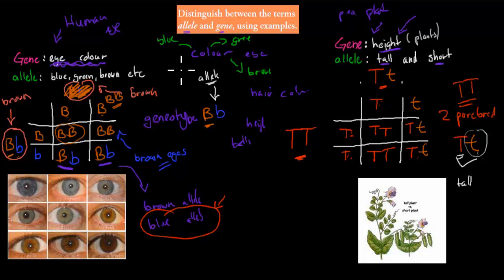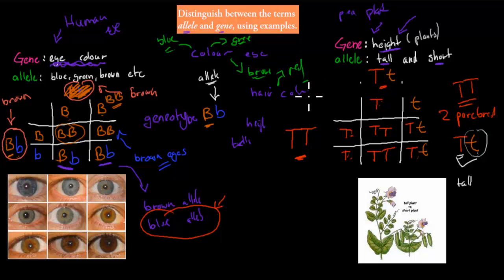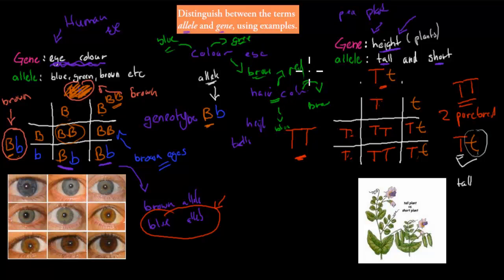So the actual allele is just a version — what kind of version of that gene it is. Same with hair colour: there is red, brown, black, etc. The gene would be just the hair colour trait itself, and the allele would be the version of it — whether it's brown, black, or other colours. I hope that was useful.